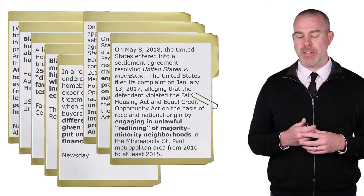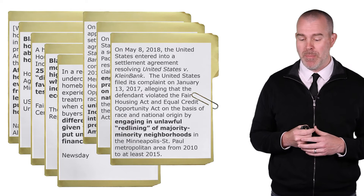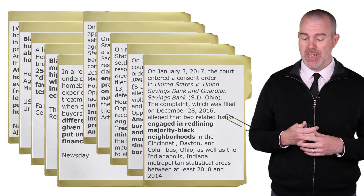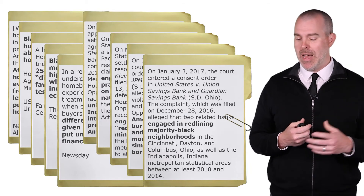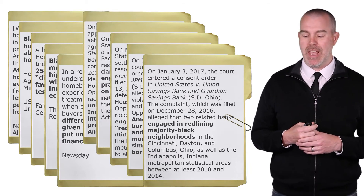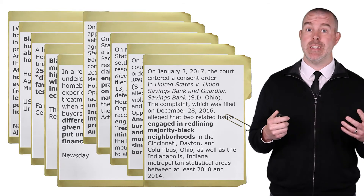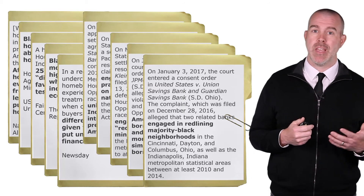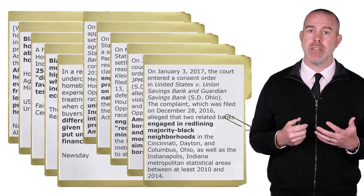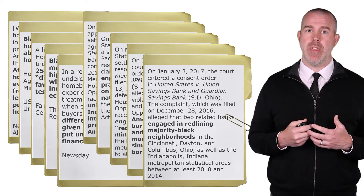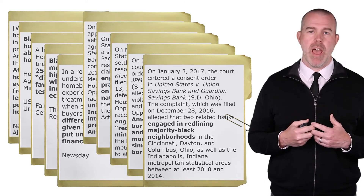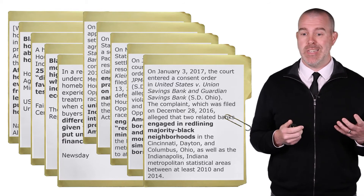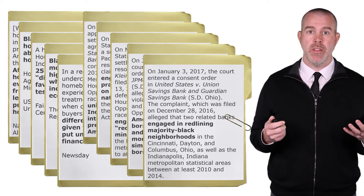Pacific Mercantile Bank — again, discriminating. Minneapolis–St. Paul was redlining as well, from 2018 and 2017. JPMorgan Chase, 2017. Union Savings Bank, again, engaged in redlining. This continues today, and these are only the ones that have been caught after investigation and settlement. Housing continues to be rife with discrimination and is a significant cause of the continued segregation within the United States.